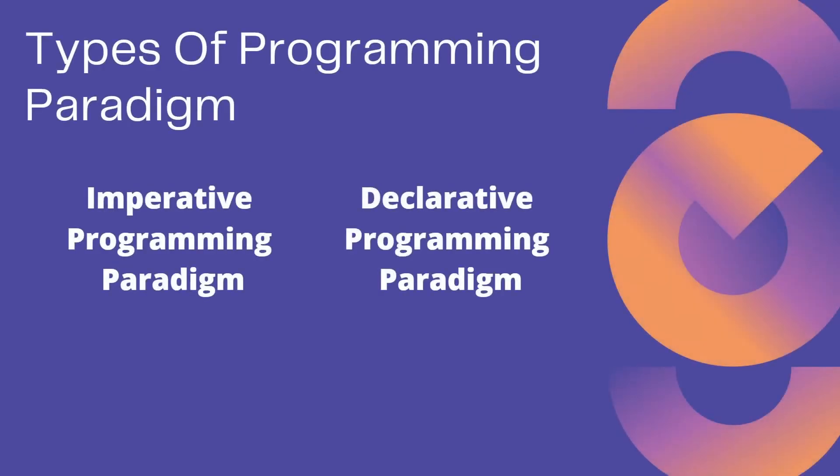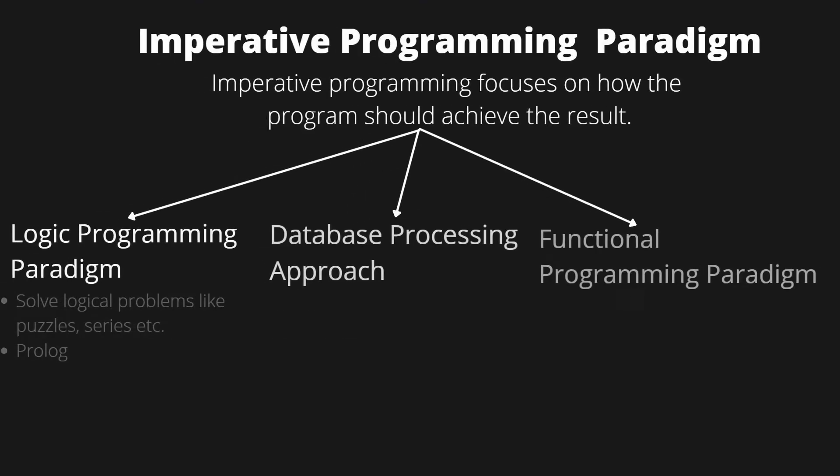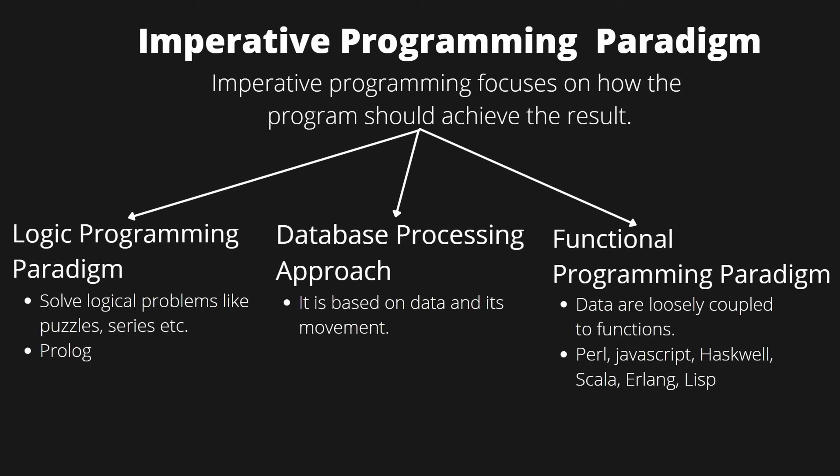The first type is the imperative programming paradigm. It is a paradigm which focuses on how a program should achieve the end result. Any approach which follows this definition can be called an imperative programming paradigm. Inside the imperative programming paradigm we have logical programming, a database processing approach, and functional programming paradigm.